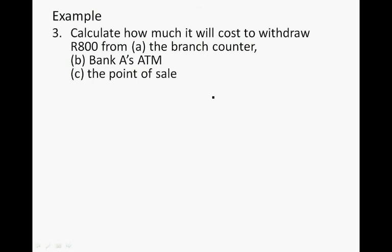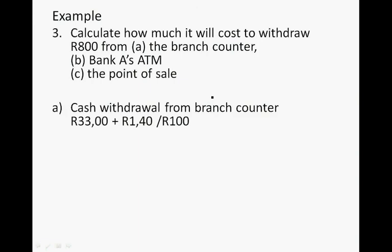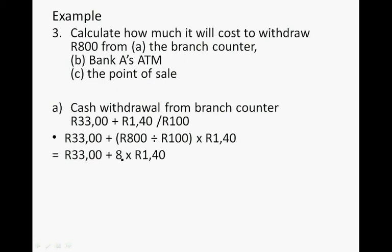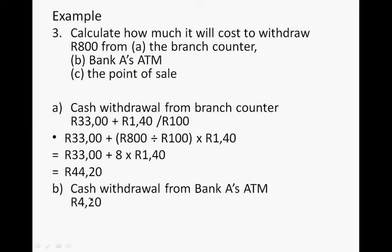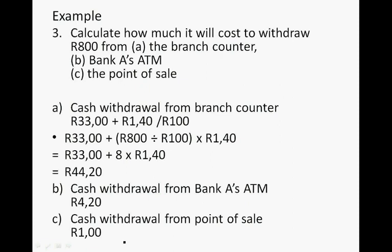Question 3: How much will it cost to withdraw R800 from the branch counter, the bank's ATM, and the point of sale? From the branch counter, it's R33.00 plus (R800 ÷ 100) × R1.40 — that's 8 × R1.40 = R11.20, so R33 + R11.20 = R44.20. From the ATM it's only R4.20, and from the point of sale it's just R1.00.